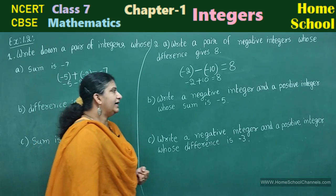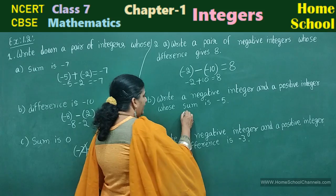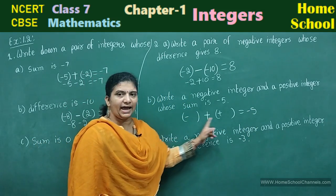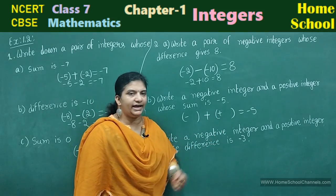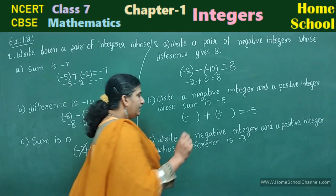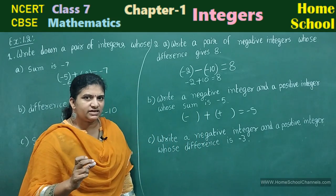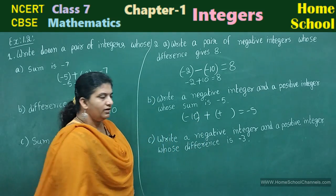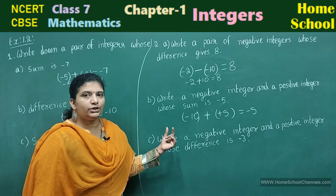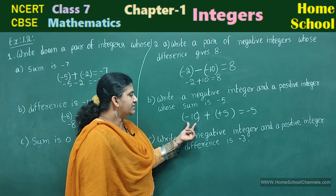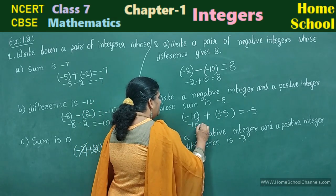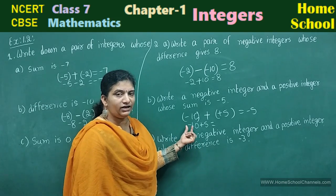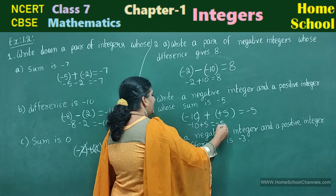B: write a negative integer and a positive integer whose sum is minus 5. When you add one negative and one positive, you should get minus 5. Minus is obtained when the greater number is negative — we take the sign of the greater number. So let me take minus 10 and plus 5. Minus 10 plus 5: one number is negative and another is positive, so subtract the smaller from the greater and take the sign of greater number. Minus 10 plus 5 will be minus 5.